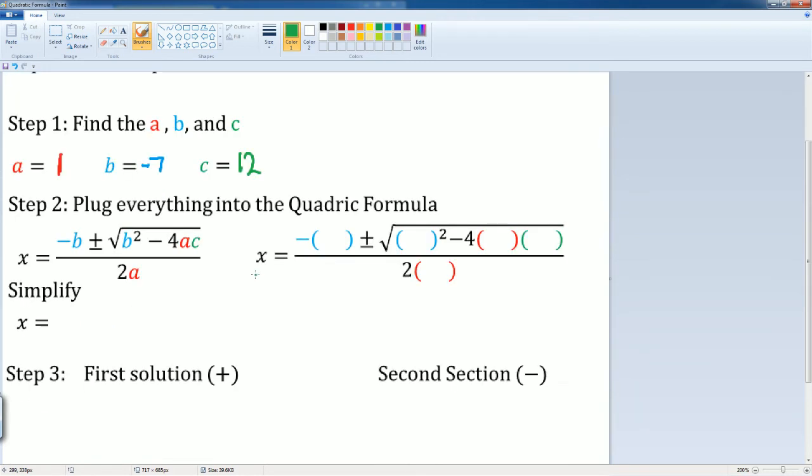Step 2, I plug into the quadratic equation. So it's going to be negative, negative 7 plus and minus radical negative 7 squared minus 4 times 1 times 12 divided by 2 over 1.